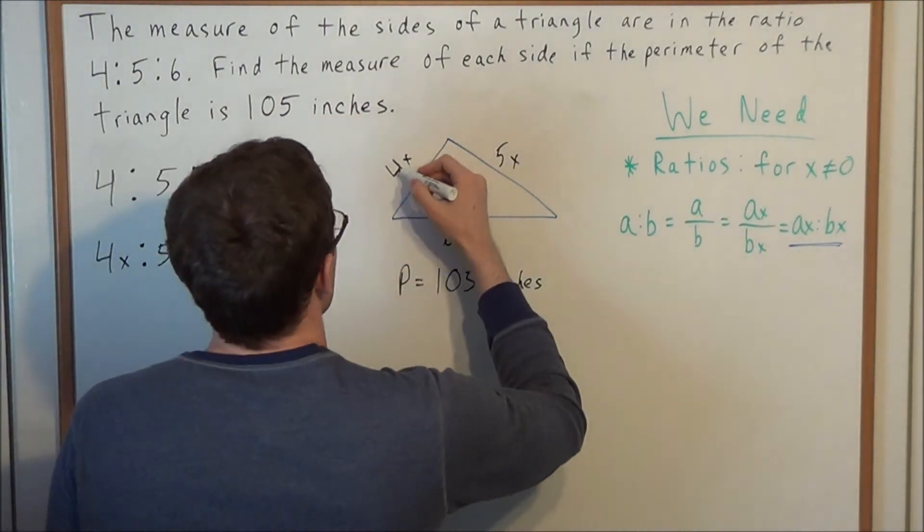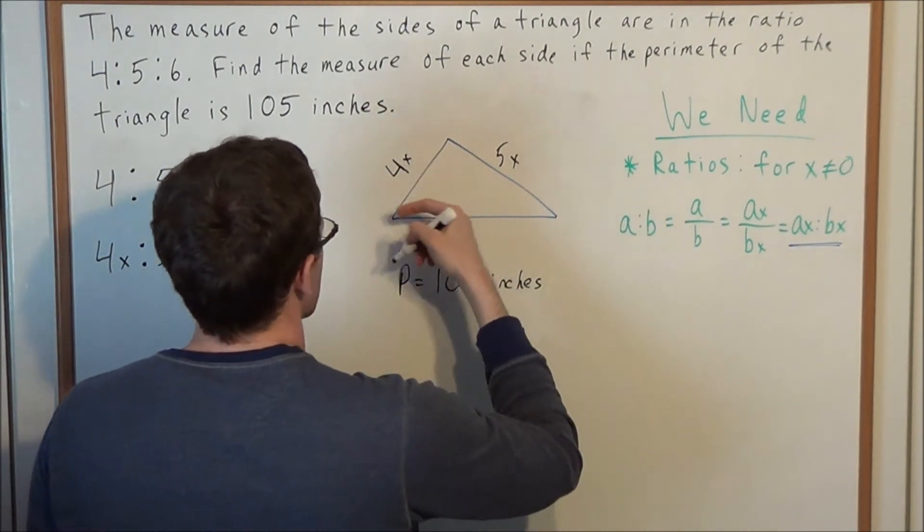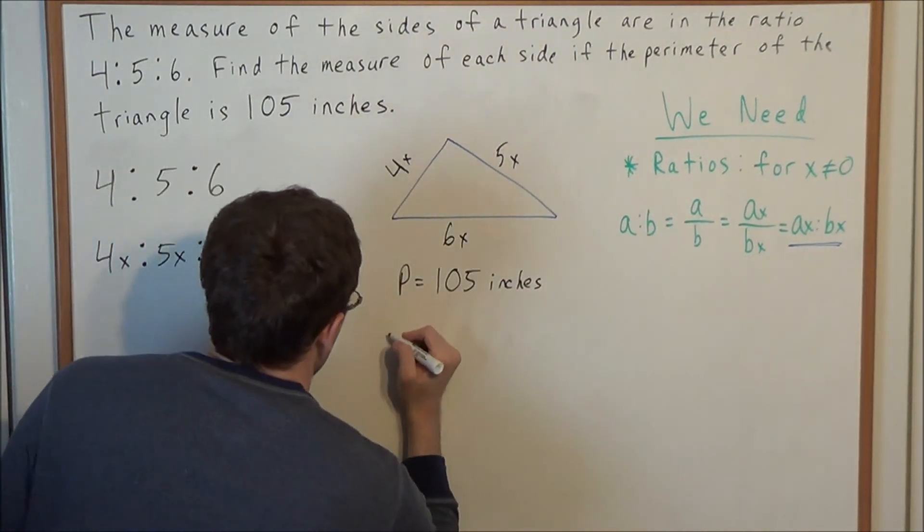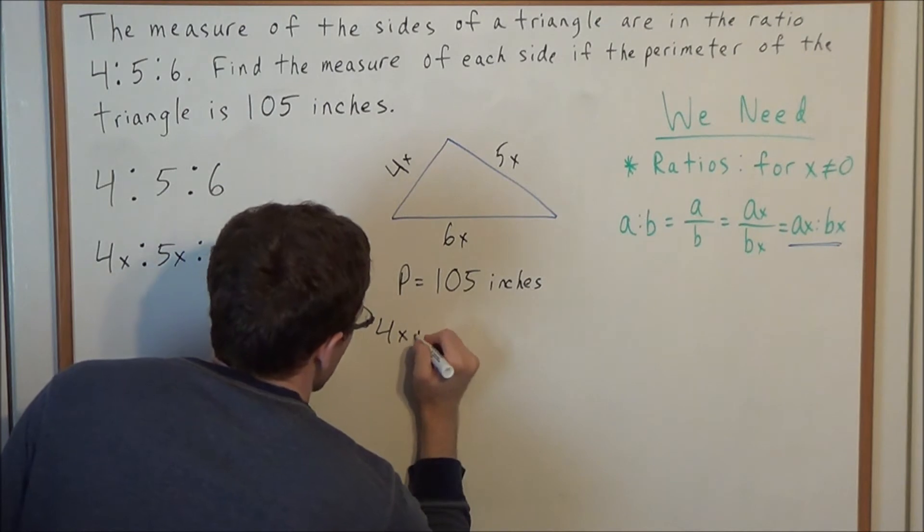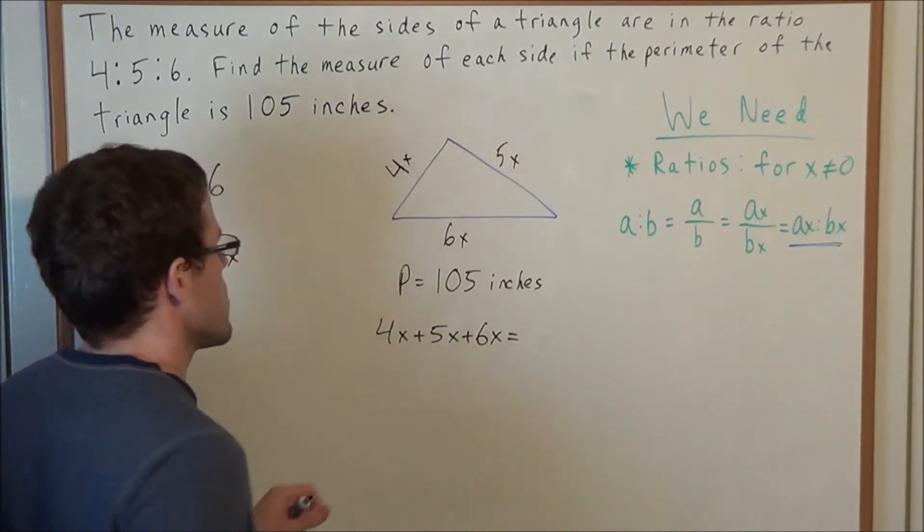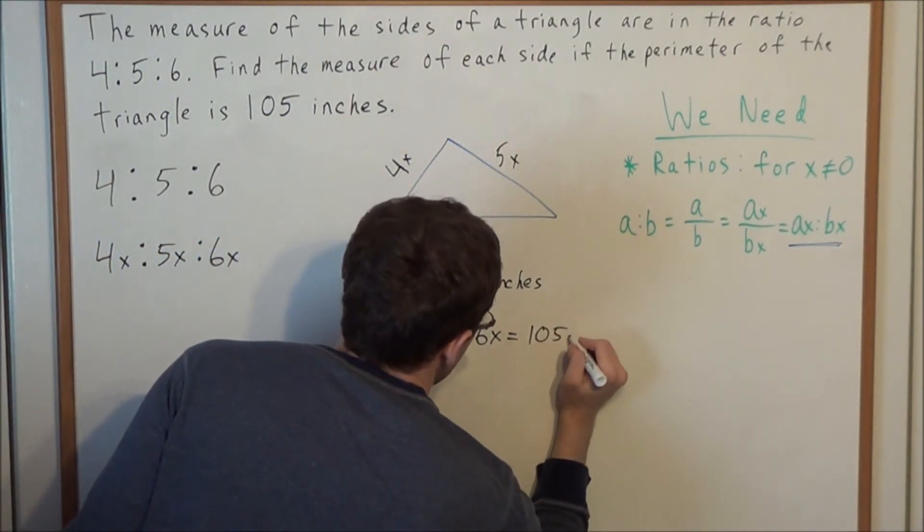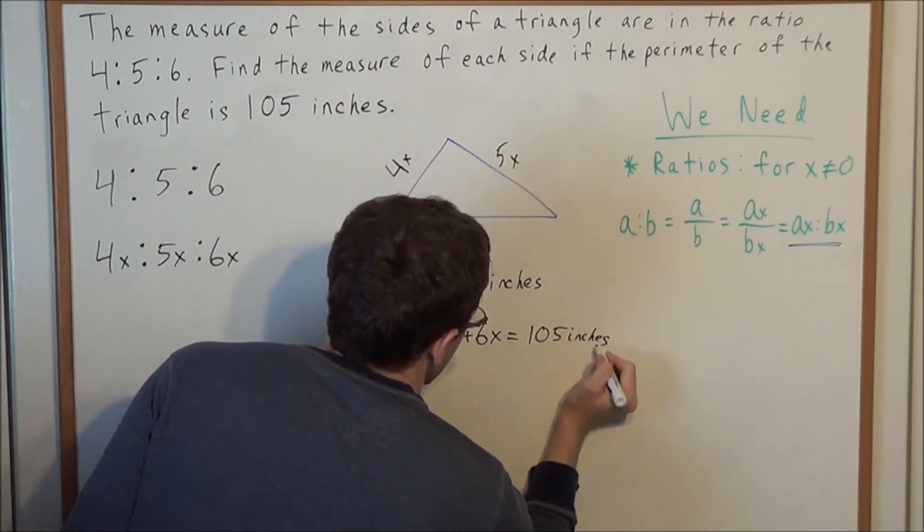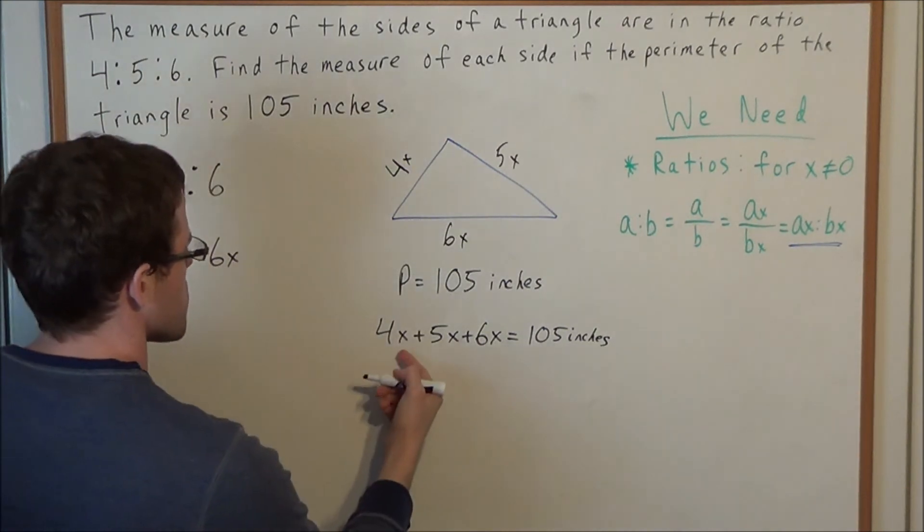How do we find perimeter? We take the sum of all the sides of this triangle. So we have 4x plus 5x plus 6x equals 105 inches. Now we're just solving this algebra equation.